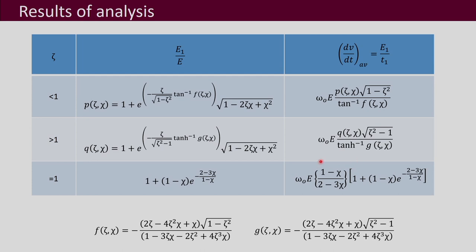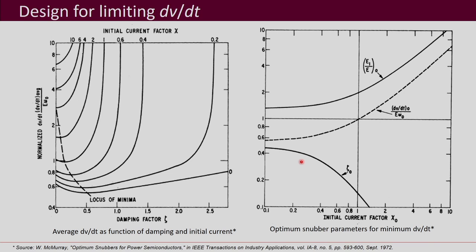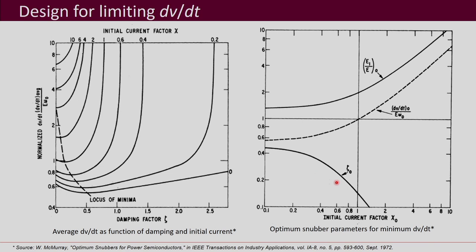This was a summary of the results we had obtained, and we used these to do the snubber design. We used the first set of equations to obtain plots of normalized peak voltage versus zeta with chi as a parameter. We saw that a minima is obtained at certain points, and those points were noted down to obtain plots of zeta0 versus chi0, E1/E0 versus chi0, and dv/dt0 by E·omega0. Similarly, another set of plots was obtained for dv/dt, showing how to do RC snubber design for limiting dv/dt.